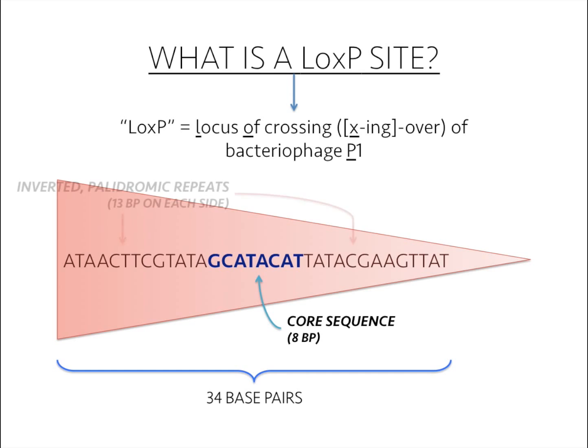The core sequence is flanked by two 13 base pair palindromic and inverted repeats to which each monomeric subunit of Cre binds.